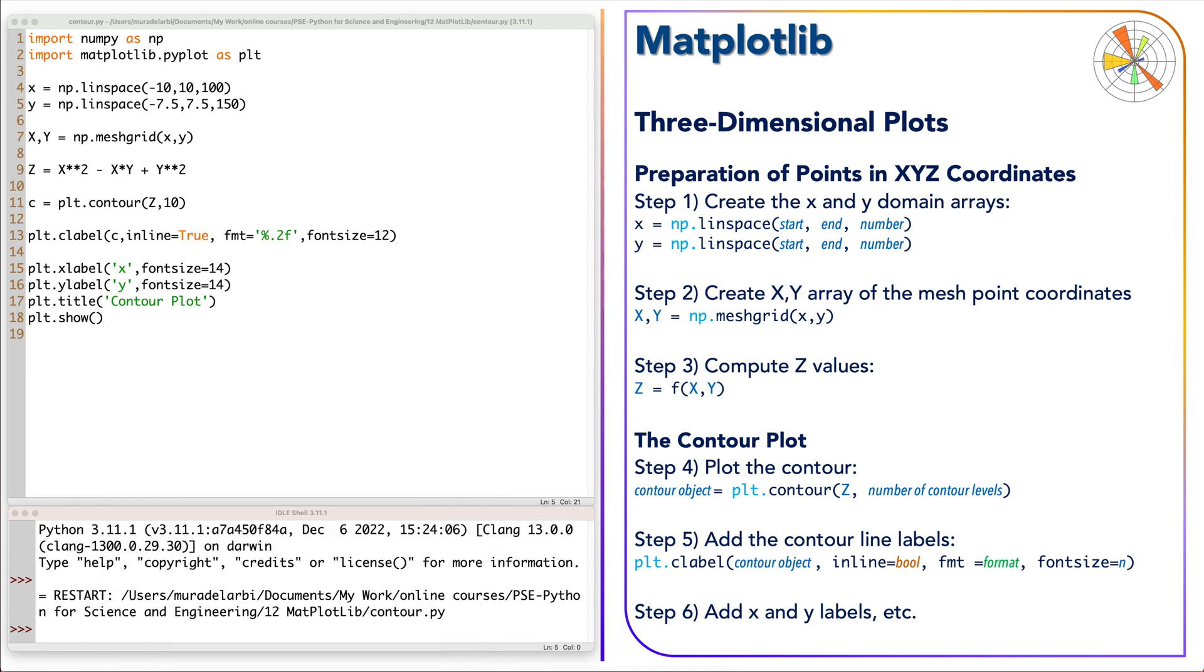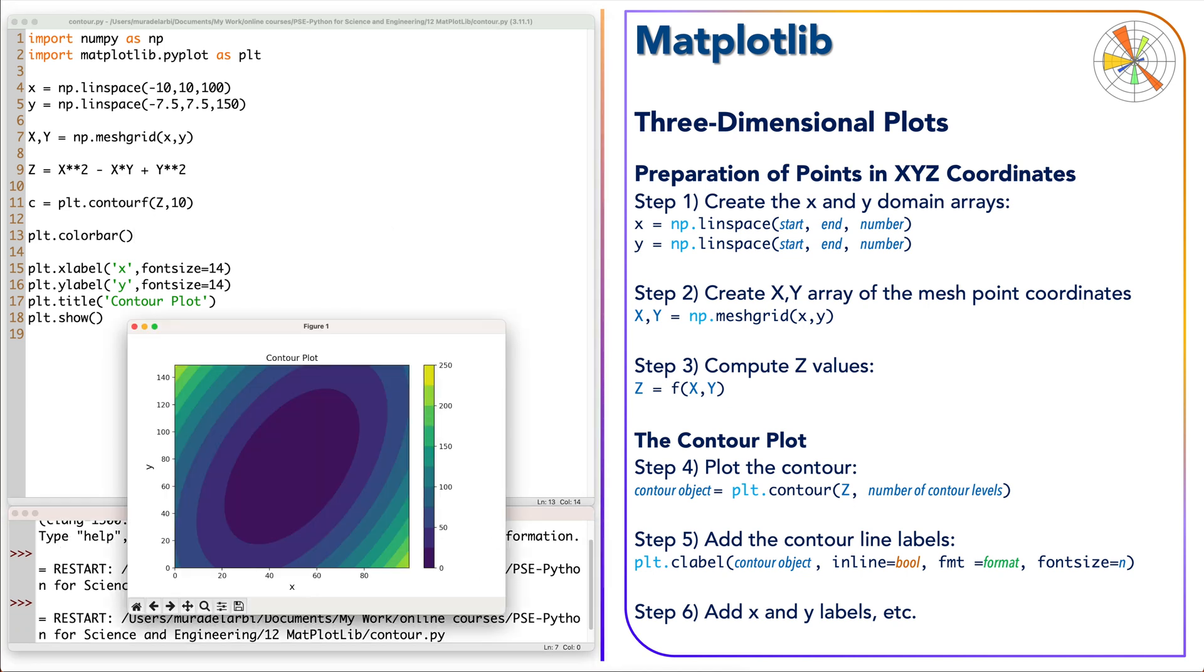There's another contour function with filled areas between levels. It is called contourf, so we add F here. Instead of the labels, we use the function called colorbar. Let's run the code and see the result. As you see here, this is another version of the contour plots, but instead of lines we have filled areas with a scale of the values of Z over the XY plane.